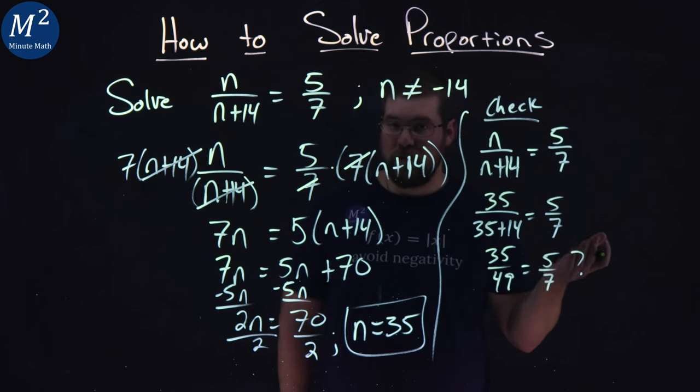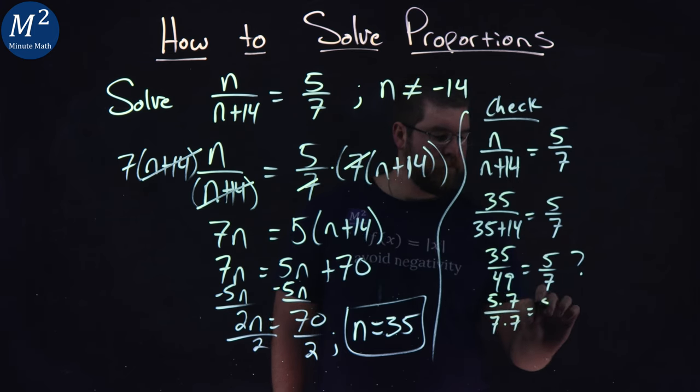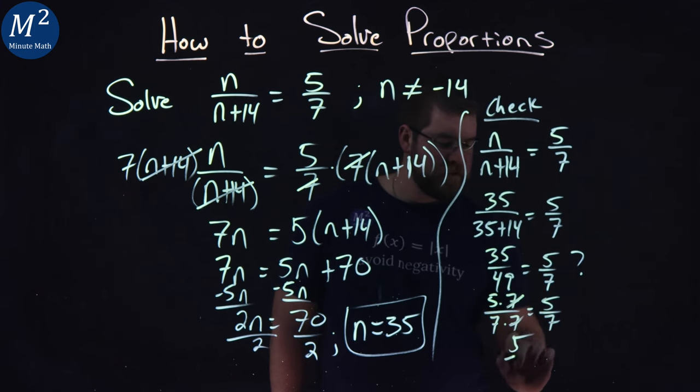Is that true? That's really the question we're asking here. Well, 35 is 5 times 7, and 49 is 7 times 7. 7s cancel, and we have 5 sevenths equals 5 sevenths.